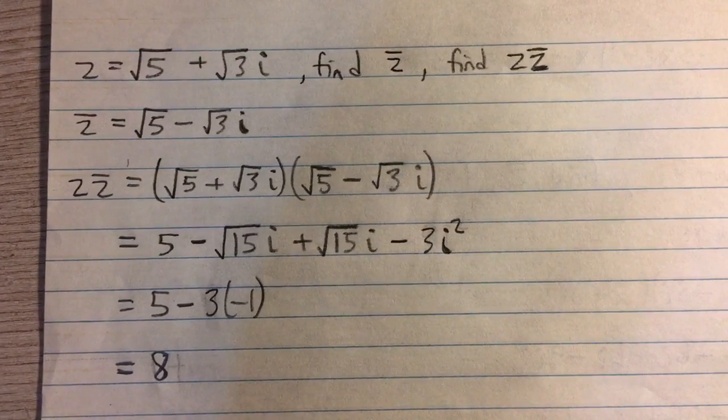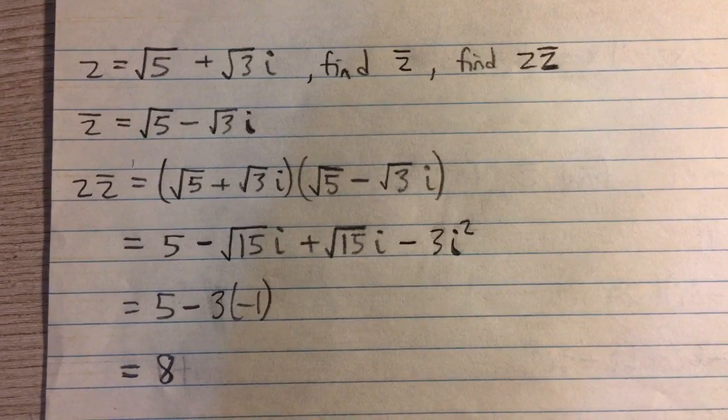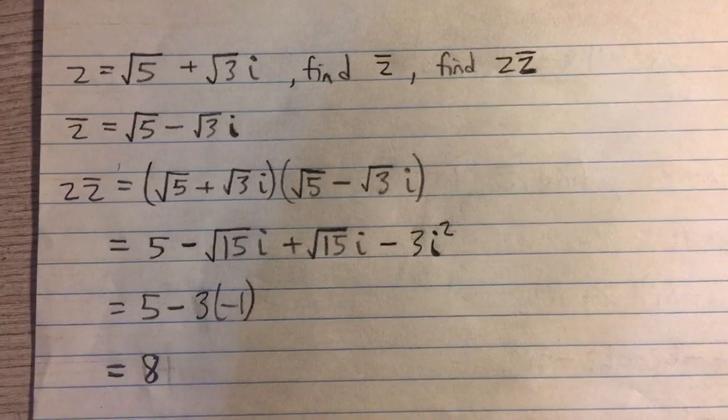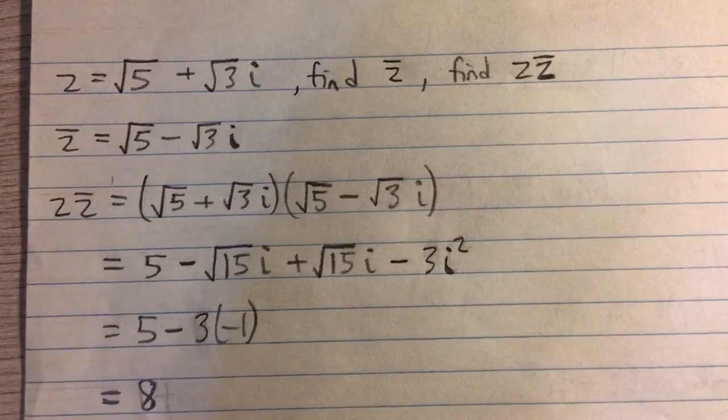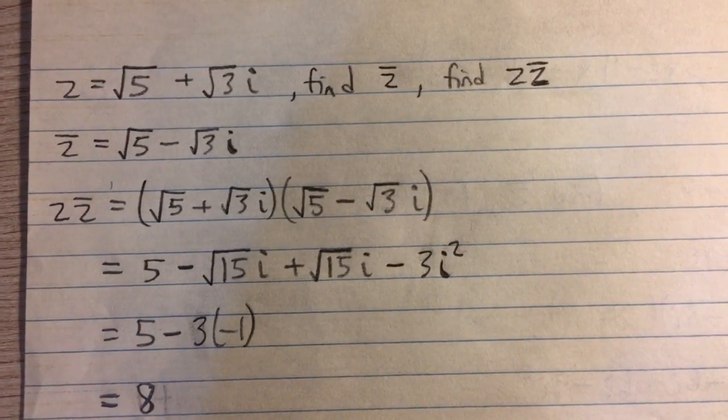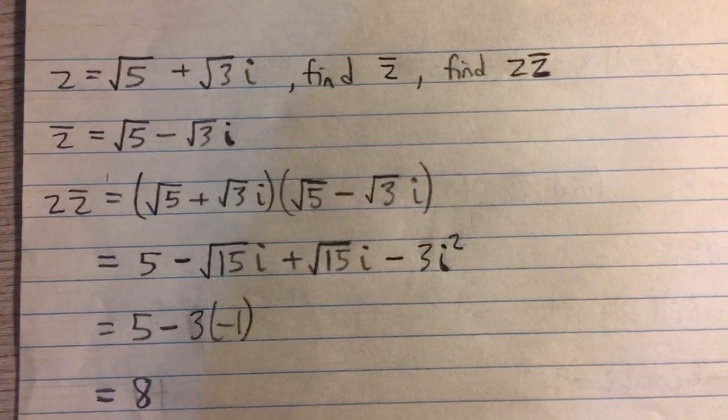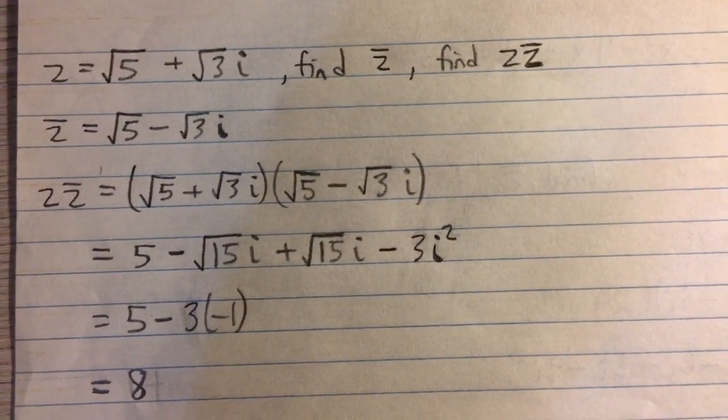Here you have the complex number z equals root 5 plus root 3 times i. We have to find the complex conjugate of that number, then find that number times its conjugate.